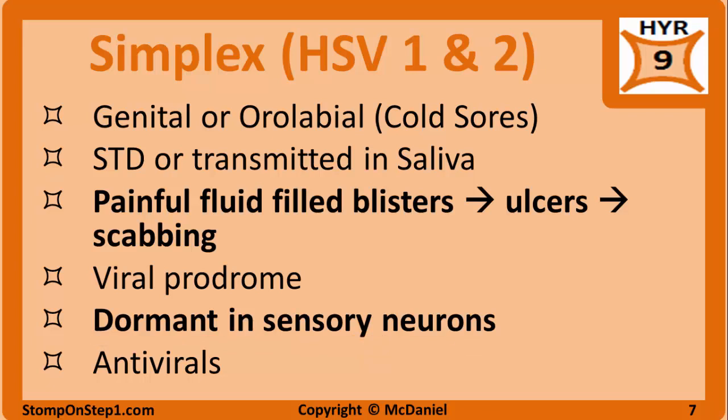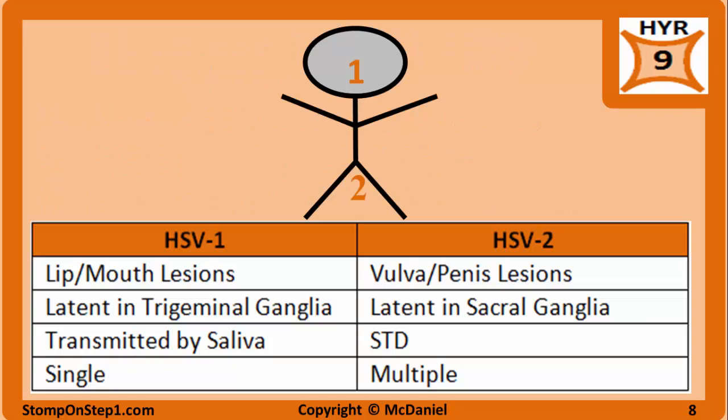Treatment usually involves antiviral drugs to reduce the severity, duration, and risk of transmission. Oral antivirals such as acyclovir are usually the treatment of choice. To review: HSV1 more commonly has singular lip or mouth lesions, lays dormant in the trigeminal nerve, and is transmitted by saliva. HSV2 more commonly has multiple genital lesions, lays dormant in the sacral ganglia, and is an STD. However, you need to remember this is an oversimplification and there is a lot of overlap between these two viruses.